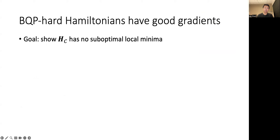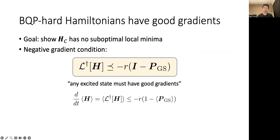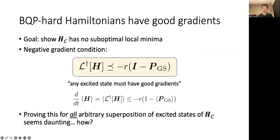To show this, we propose a mathematically natural sufficient condition, which we call the negative gradient condition. This is the following operator inequality relating the Lindbladian adjoint acting on the system Hamiltonian to the projector onto the ground states of the Hamiltonian. Essentially, this inequality says that any excited state of the Hamiltonian must have good gradients, since the inequality states that the energy decreases whenever the state is not in the ground state subspace. Proving this condition seems daunting because we now need to worry about all arbitrary superpositions of excited states, not just the ground states of H sub C, which has been the primary focus of previous studies of circuit Hamiltonians.